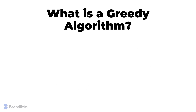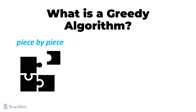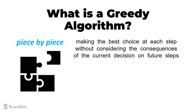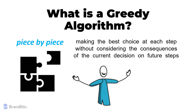Starting with — what is a greedy algorithm? At its core, a greedy algorithm builds up a solution piece by piece, always choosing the next piece that offers the most immediate benefit. The essence lies in making the best choice at each step without considering the consequences of the current decisions on future steps. While this might seem short-sighted, in many cases, it surprisingly leads to a globally optimal solution.